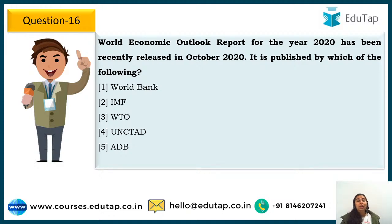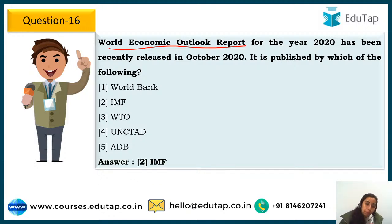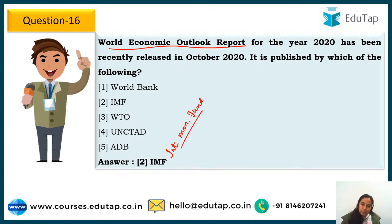Question 16: The World Economic Outlook Report for 2020 was recently released in October. It is published by which organization? Options are World Bank, IMF, WTO, UNCTAD, or ADB. The answer is the International Monetary Fund (IMF) — the World Economic Outlook Report is published by IMF.